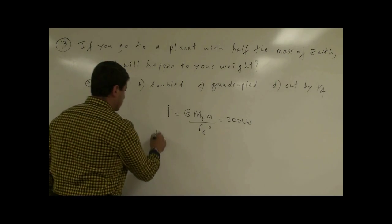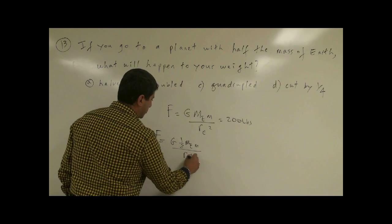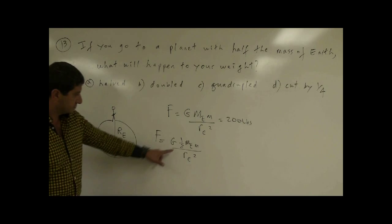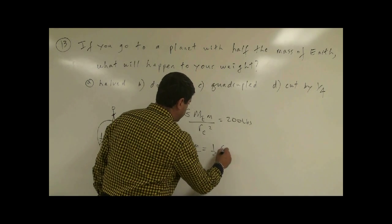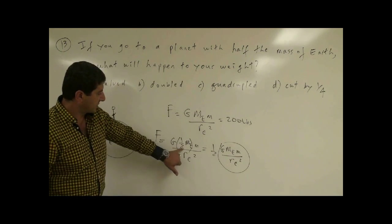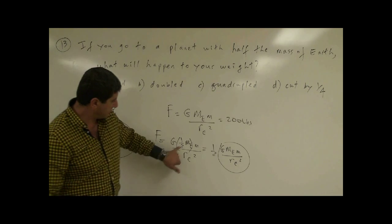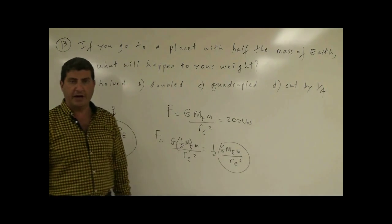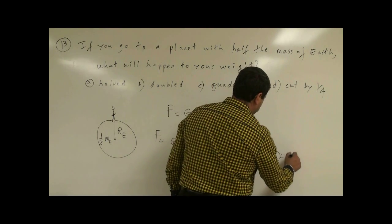What is your weight going to do? It's going to be F equals G times half M_E times m over R_E squared. That other planet has the same radius as the Earth, so the radius is the same, but only its mass is less — it's half the mass of the Earth. So your weight is going to be one-half times G M_E m over R_E squared. Since I only changed the mass of the planet, this one-half comes out. G M m over R squared is 200 pounds, so half times 200 equals 100 pounds.